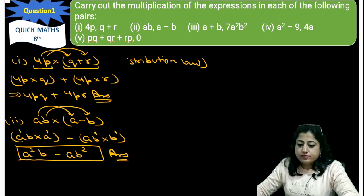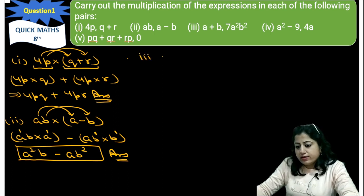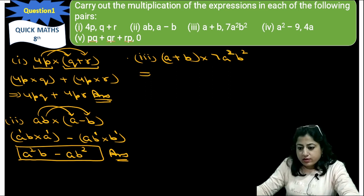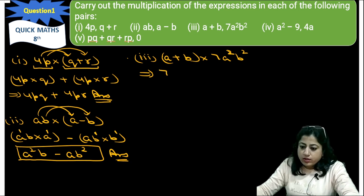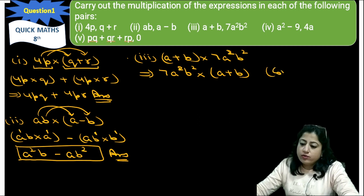Now come to the third part: (a + b) into 7a²b². First of all, we can write it using the commutative law — 7a²b² can be placed in front and then (a + b). This is called the commutative law.